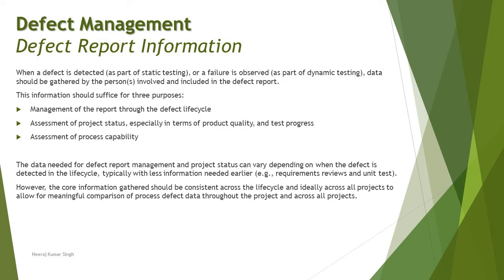Before that, let's look at the main purpose of writing a defect report. When a defect is detected as part of static testing, or a failure as part of dynamic testing, data should be gathered by the person involved — generally a tester — and included in the defect report. In static testing, anyone involved in the review process can be the reporter. This information should serve three key purposes: management of the report through the defect life cycle, assessment of project stages in terms of product quality and test progress, and assessment of process capability.